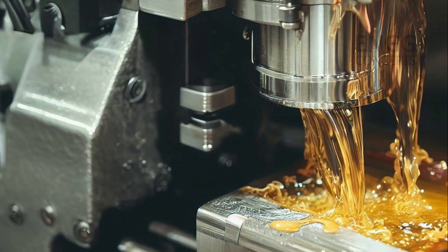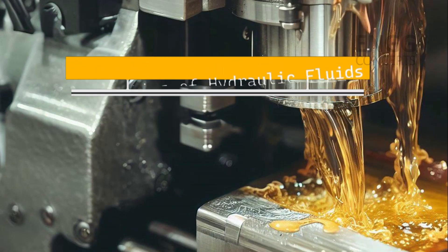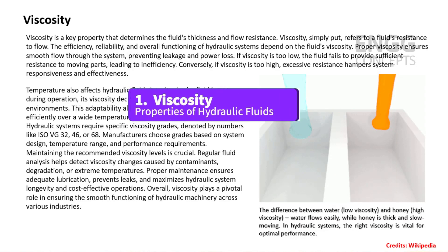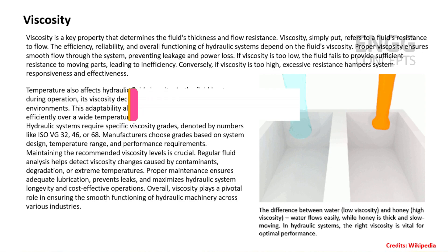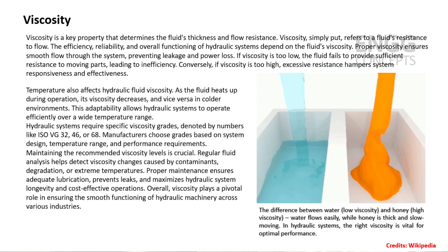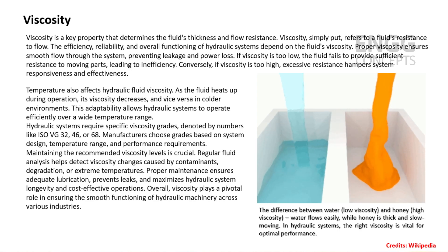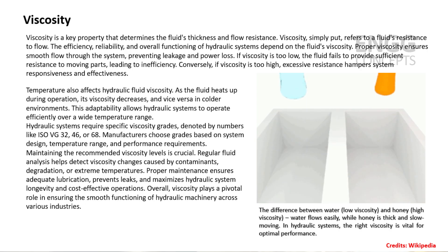Now that we know about the different types of hydraulic fluids, let's examine some essential properties that determine their effectiveness. The first property is viscosity. Viscosity refers to a fluid's resistance to flow. This is a critical property as it affects the efficiency and response of the hydraulic system. The fluid's viscosity must match the equipment's requirements for optimal performance.